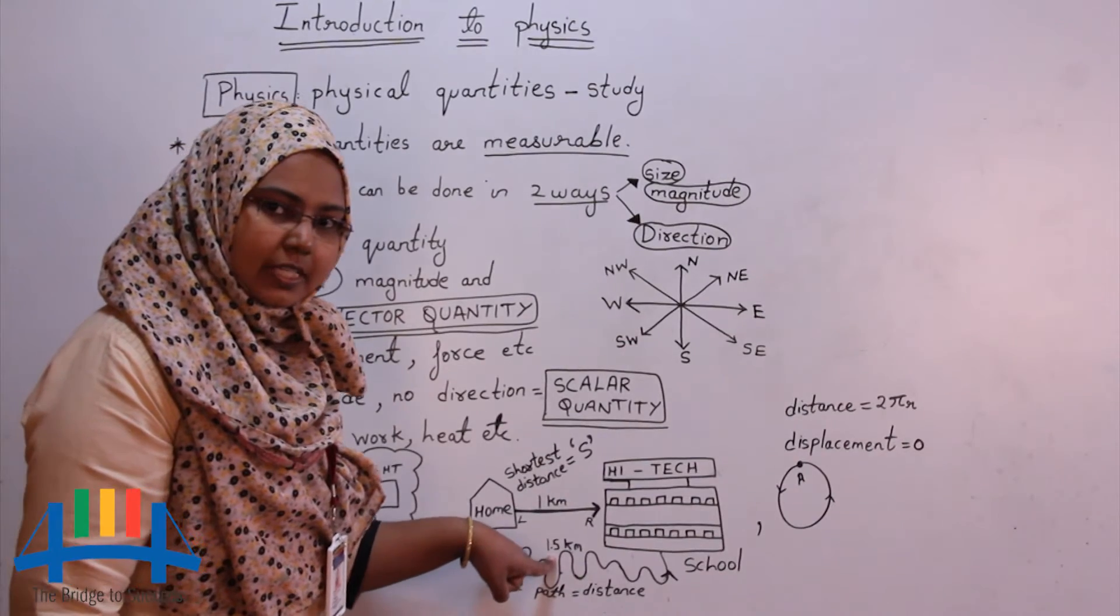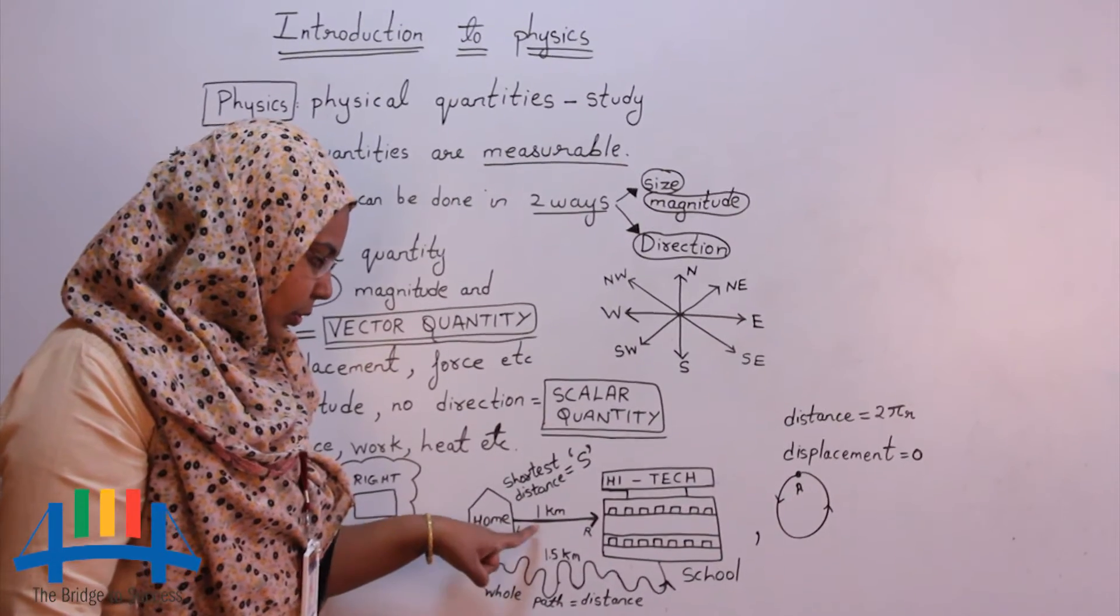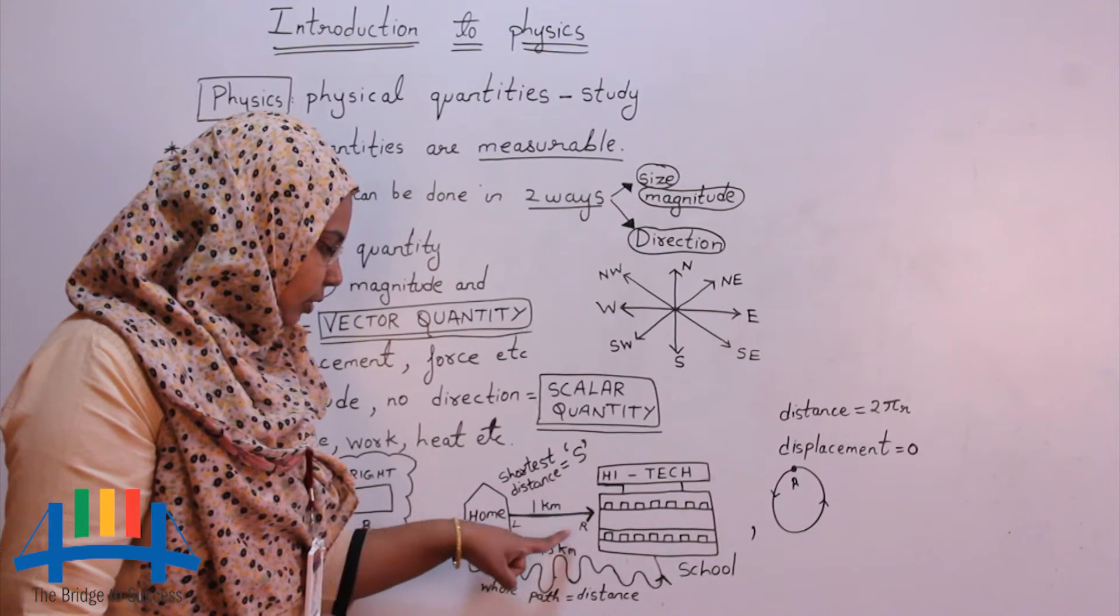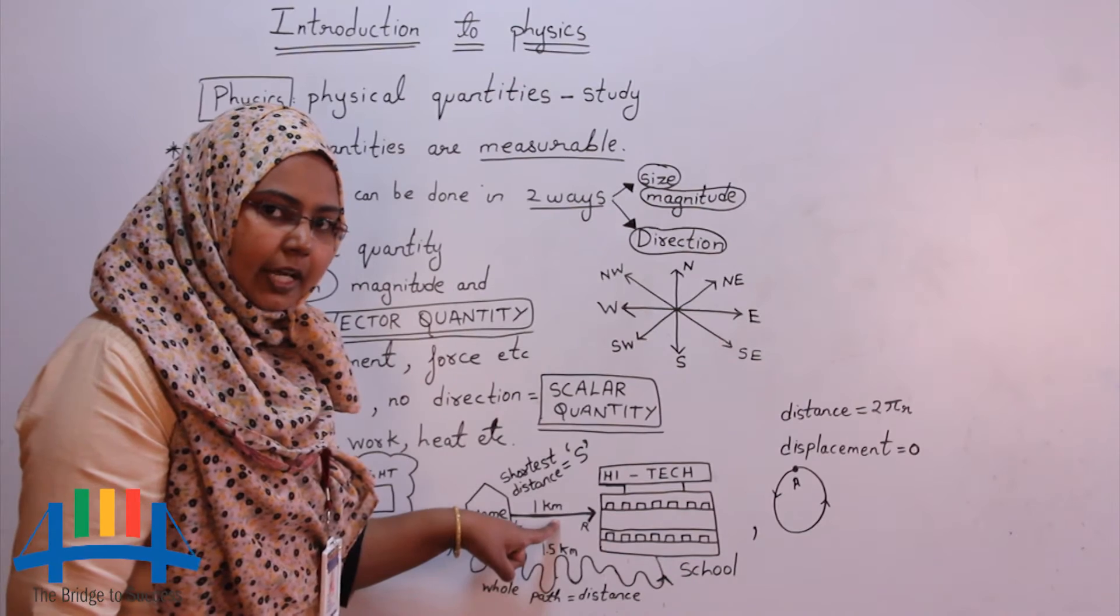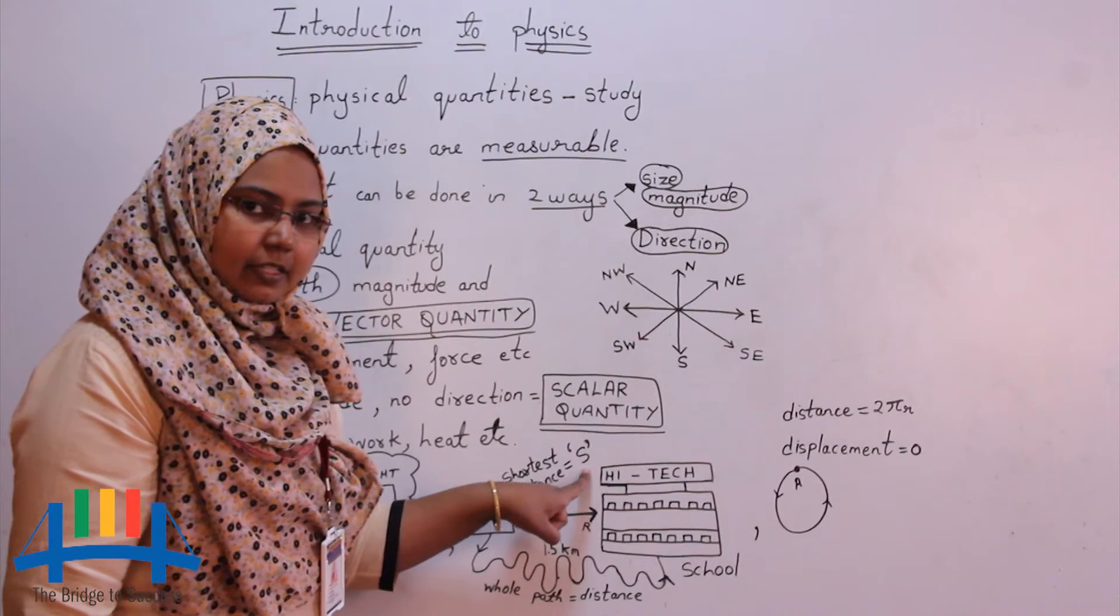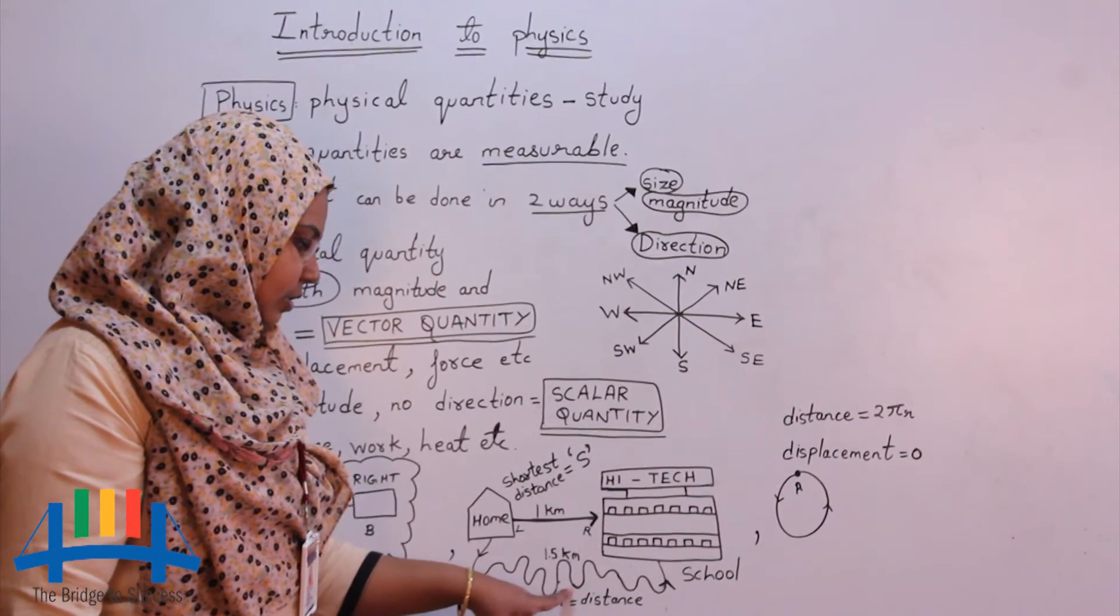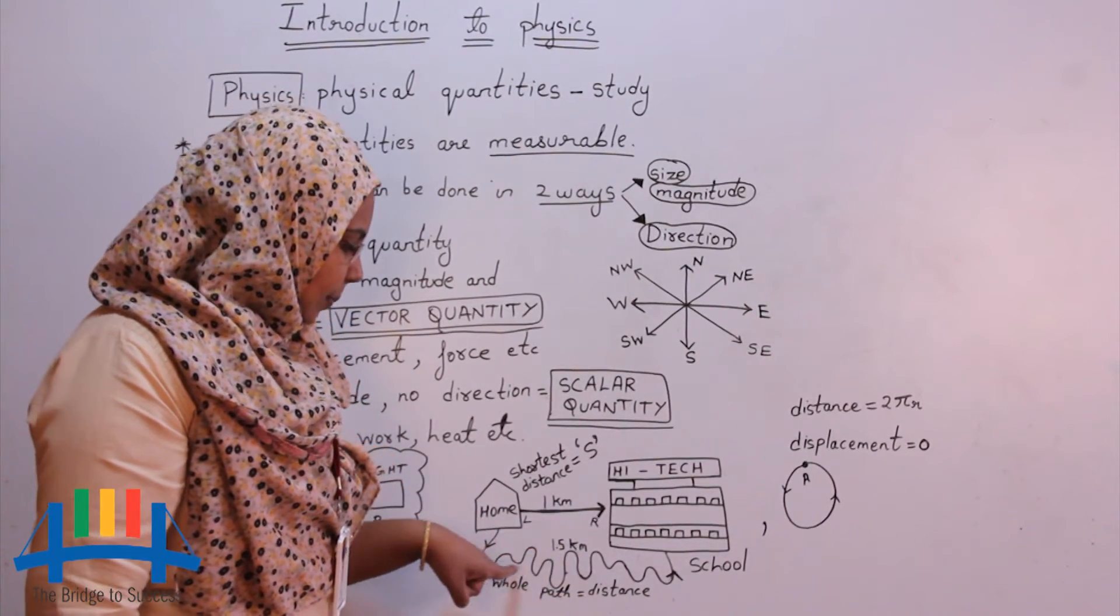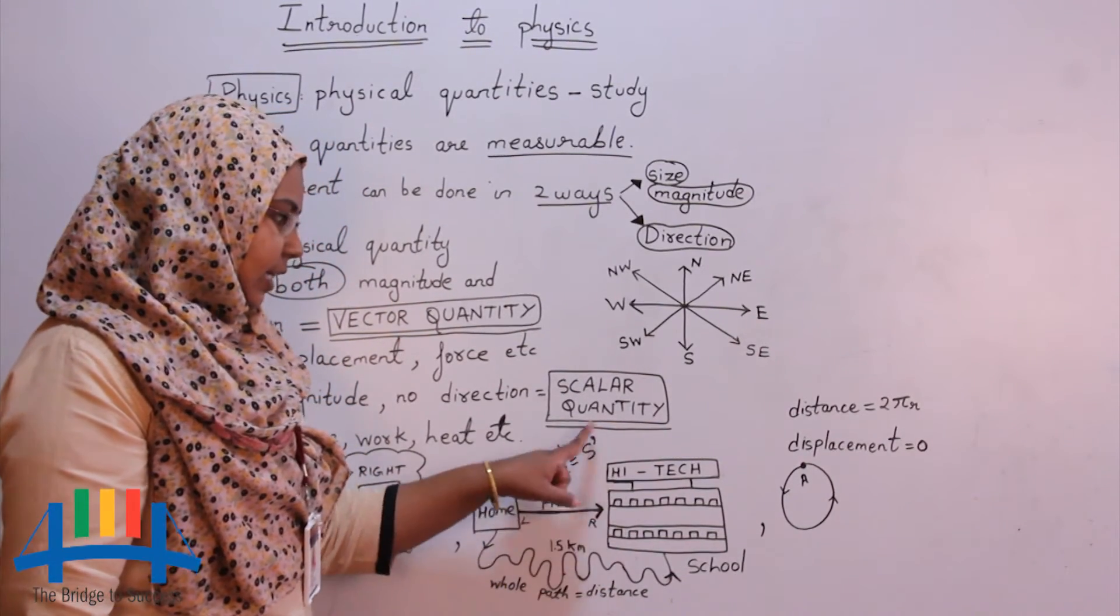Here the magnitude is 1.5 km. In this case, you can only say the magnitude but no direction. Whereas in this case, this route, you can say both magnitude that is 1 km and the direction is left to right. So this shortest distance, which gives you both magnitude and direction is called displacement, denoted with the letter S. It is the example of vector quantity. And this path, which only gives you the magnitude but no direction, this whole path is called as distance. And this is the example of scalar quantity.